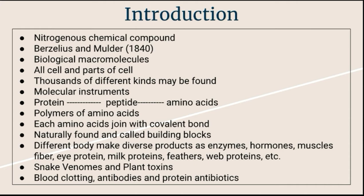Proteins are polymers of amino acids, and they are joined together by peptide bonds or covalent bonds. We know very well that there are 20 amino acids naturally found, and those 20 amino acids we call building blocks — or body building blocks. From these building blocks, different organisms can make diverse products such as enzymes, hormones, muscle fibers, lens protein of the eye, milk proteins, and feathers.